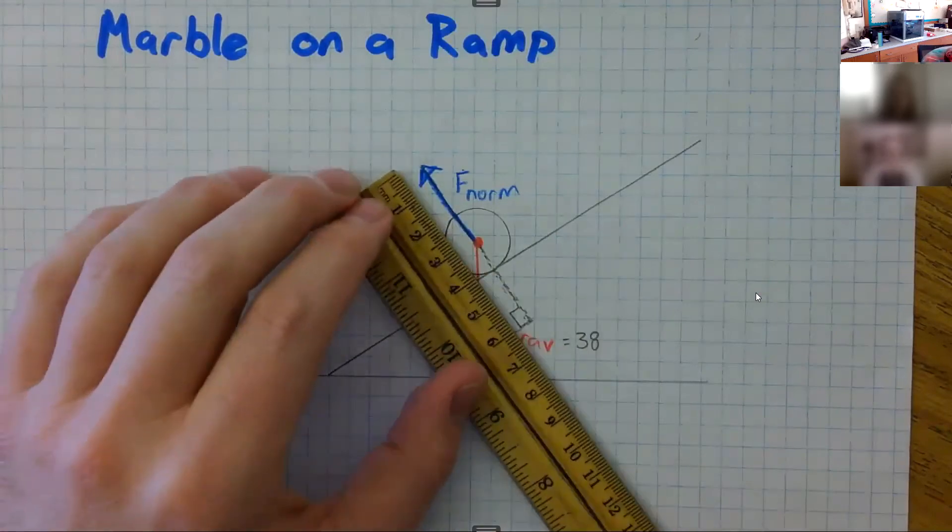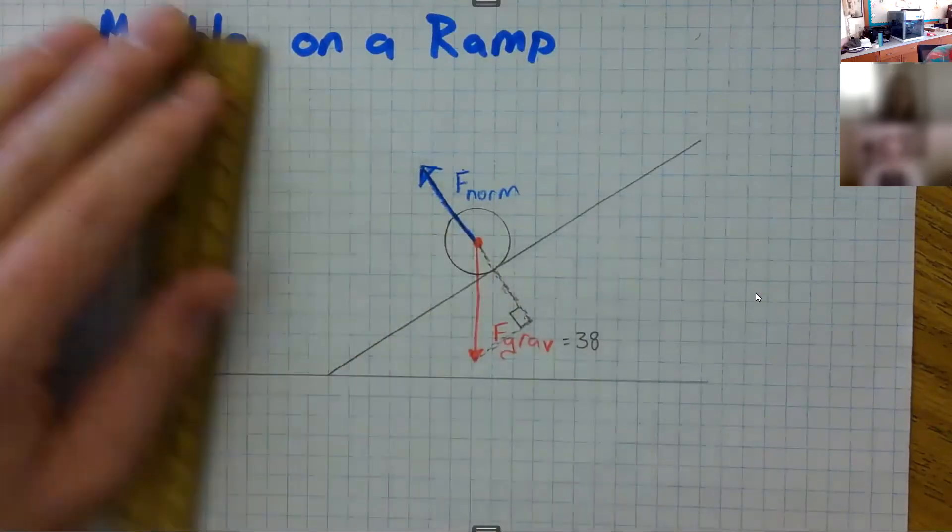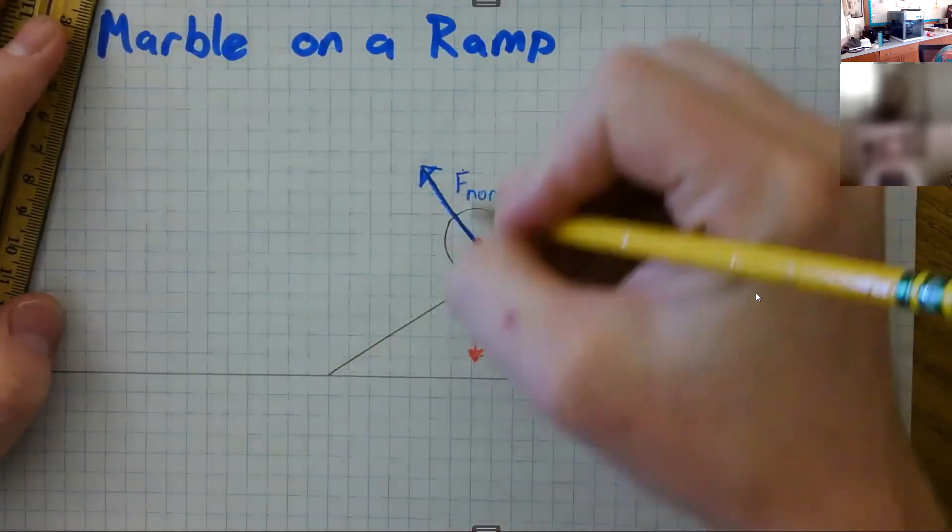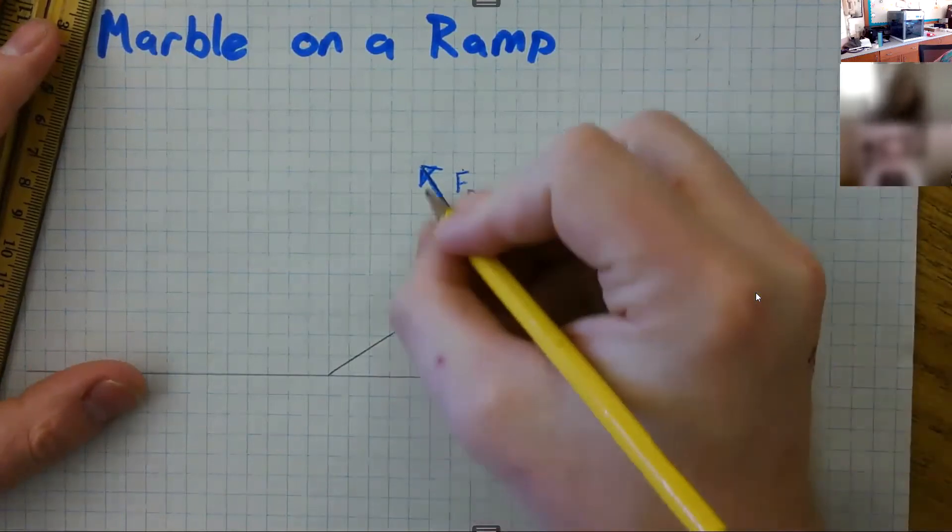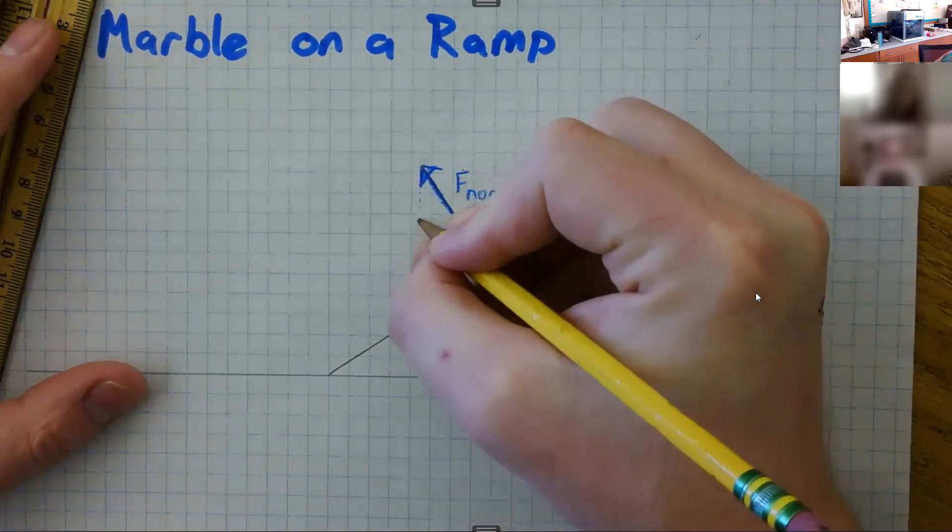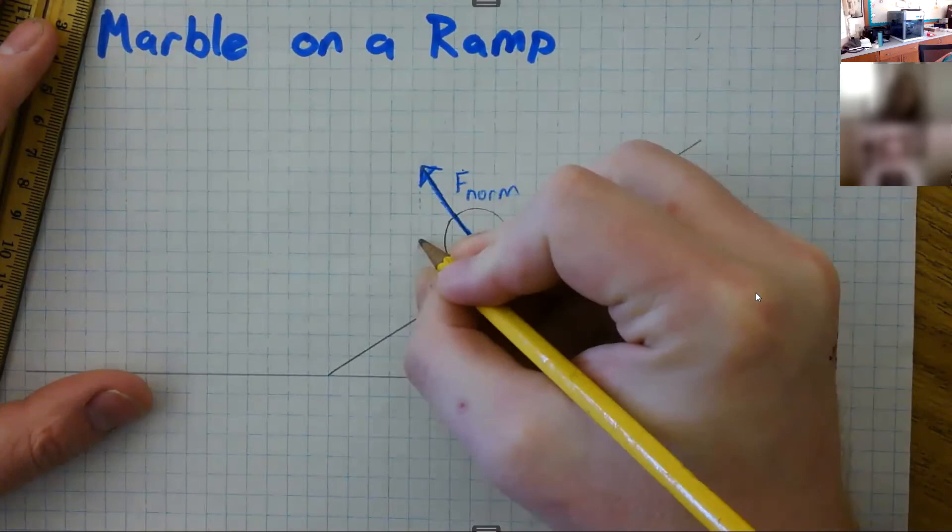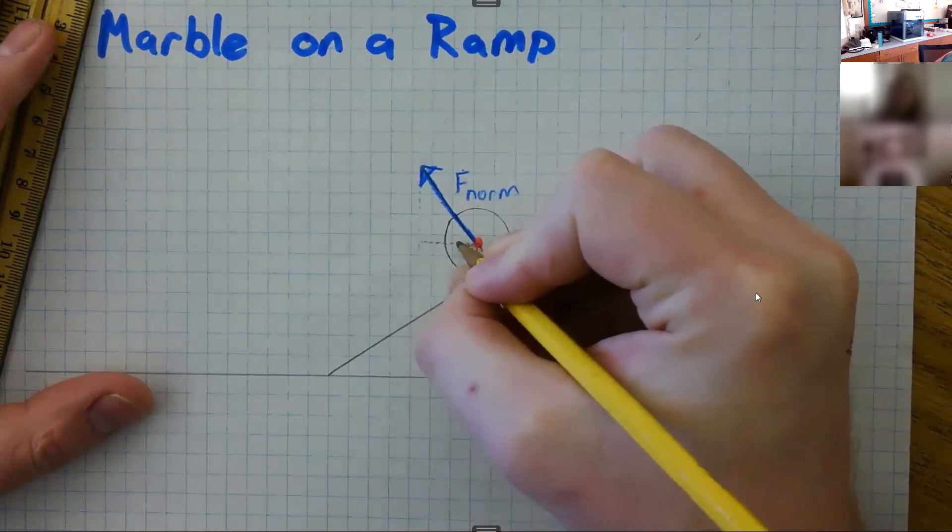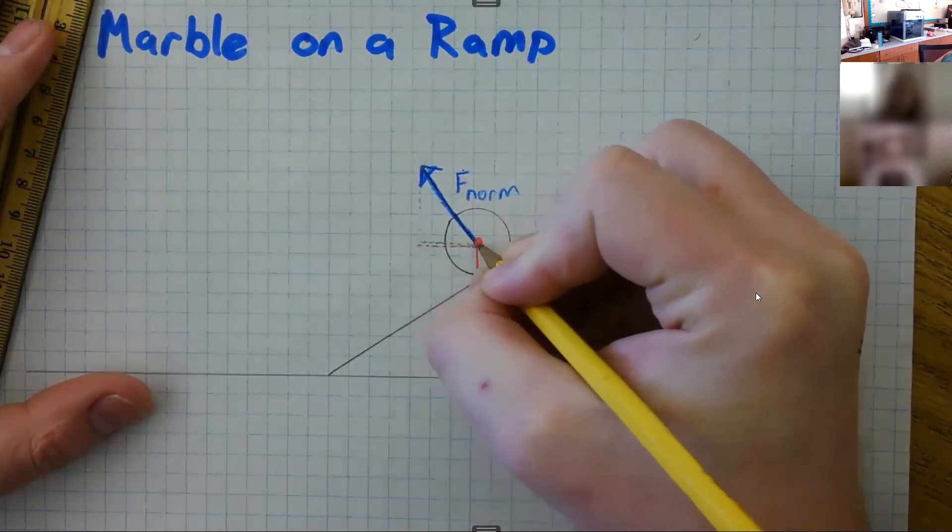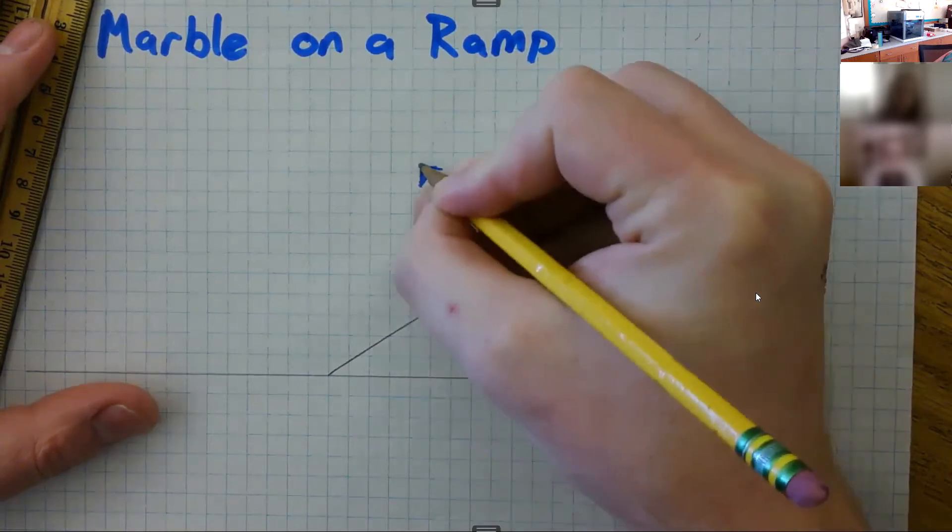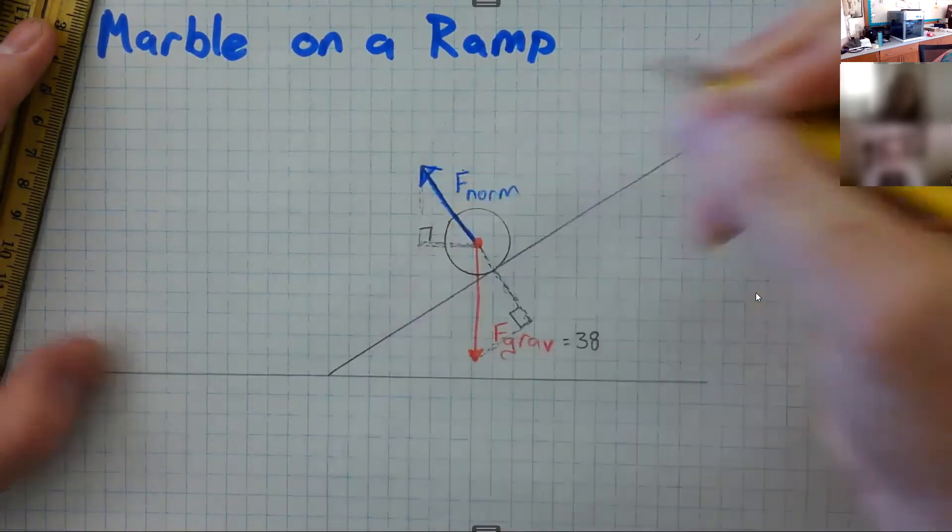And then normal force is pointing at a diagonal, but we need to break it up into its left-right and its up-down components. So that means we need to draw another imaginary right triangle and show you the trigonometry, the triangle geometry of this.